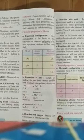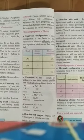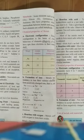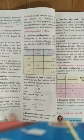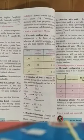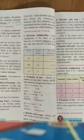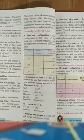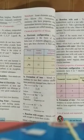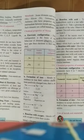Sab ko samaj mein aaya? Non-metals ka physical state, physical properties konsi konsi aati hain metals ki, aur un mein exception konse konse aaye — metals ki yeh sab properties clear ho gayi na.